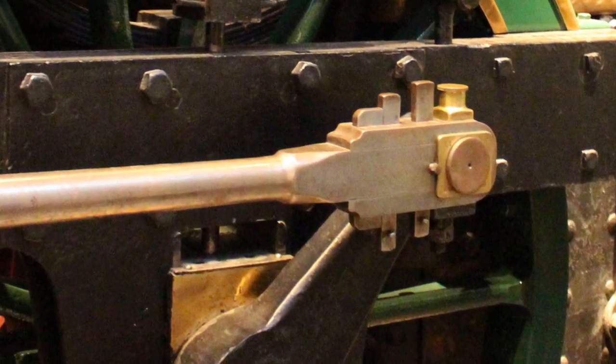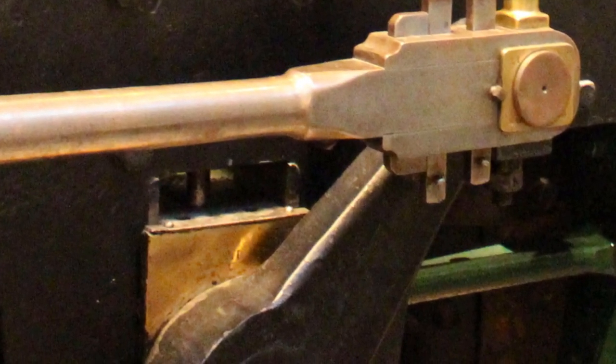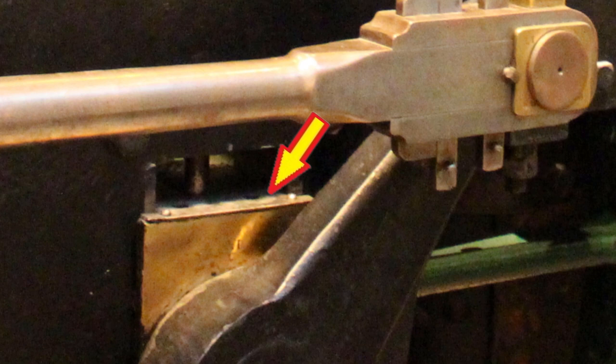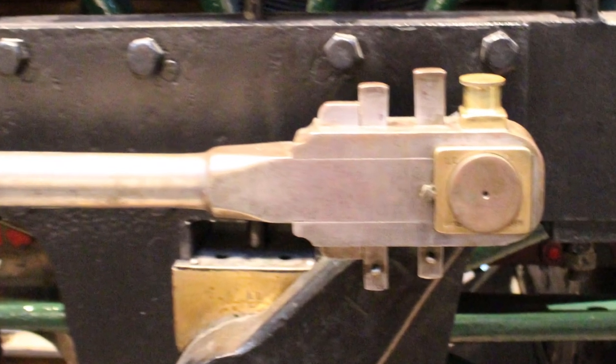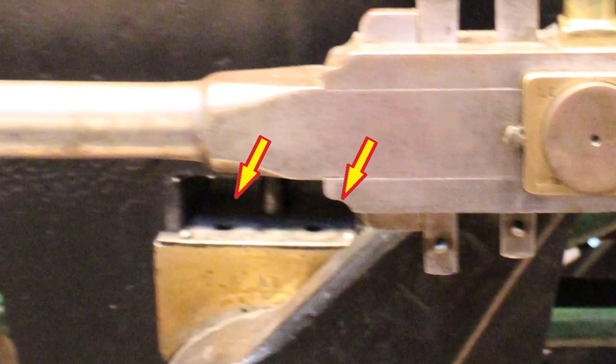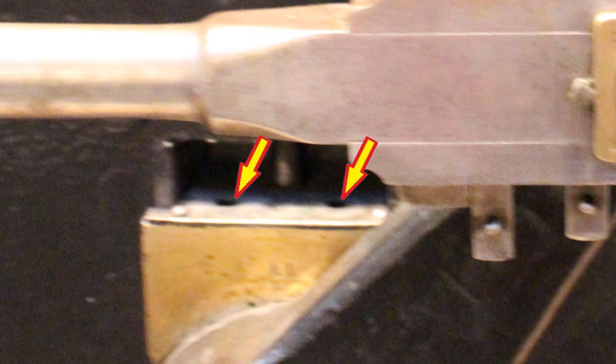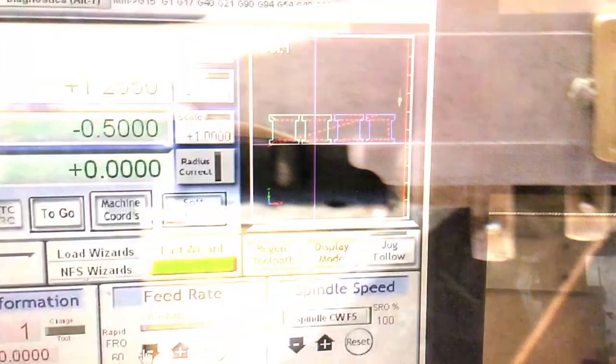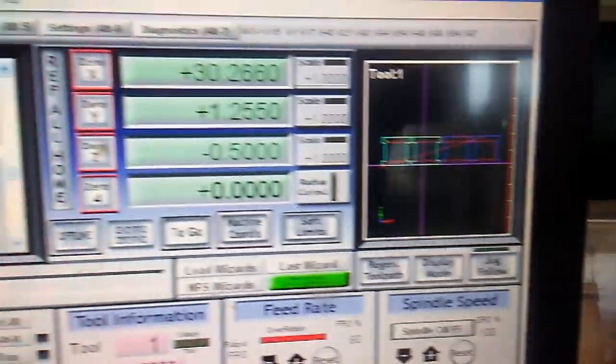When you look at some photographs of the full size engine you can see that the axle boxes have a thin cover. They also have a couple of holes presumably to allow for filling with oil. I cut the covers out on the CNC.